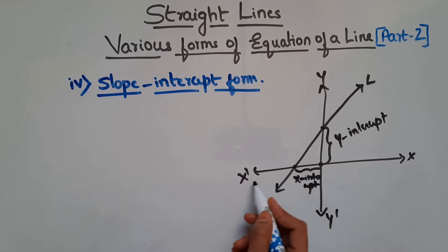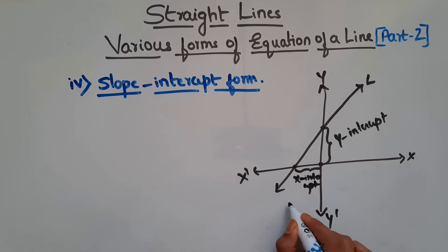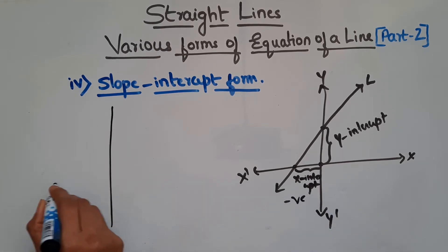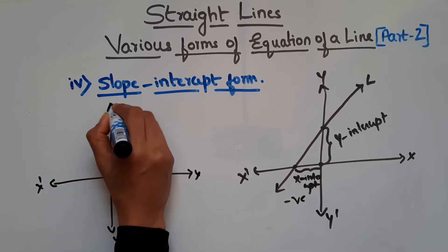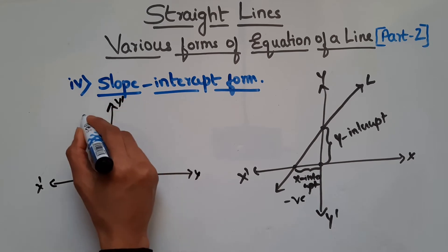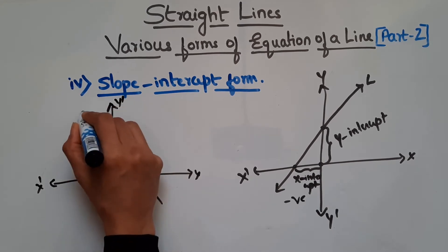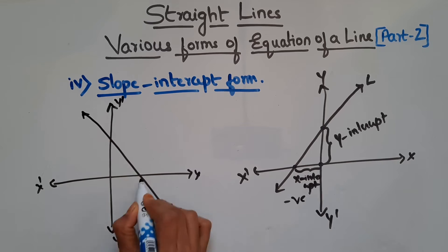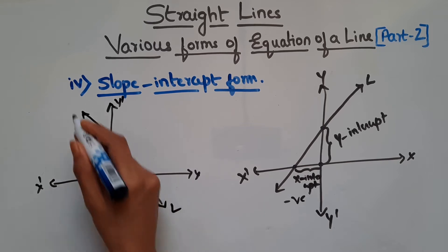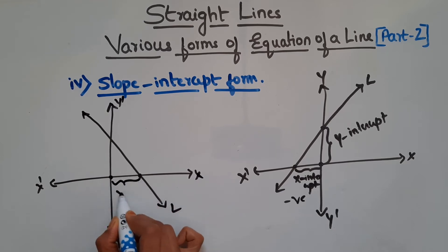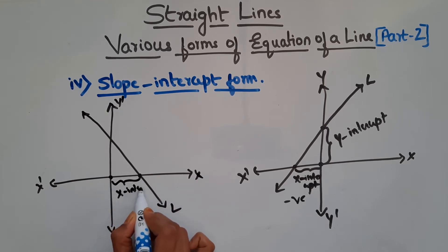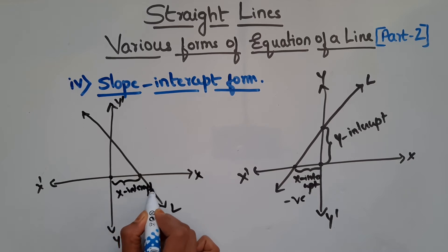Since this side has negative values for x, your intercept will be negative. If you have a line like this — this is your x-axis and this is your y-axis — so this is the point where this line cuts the x-axis. From the origin to this point, this is your x-intercept. Here x is positive, so you have a positive intercept.